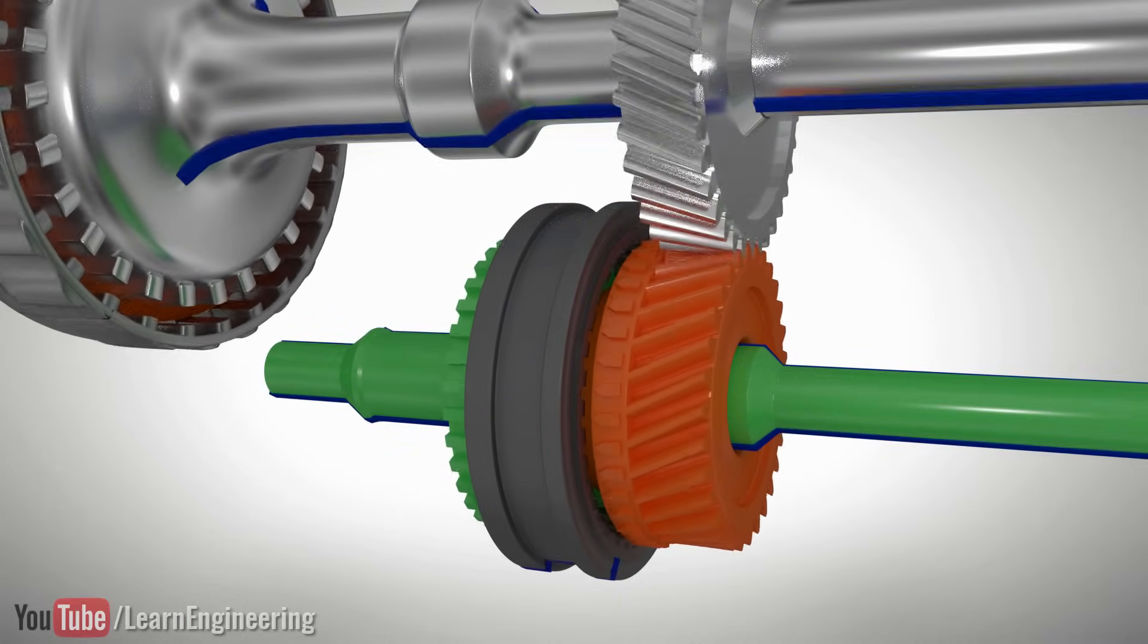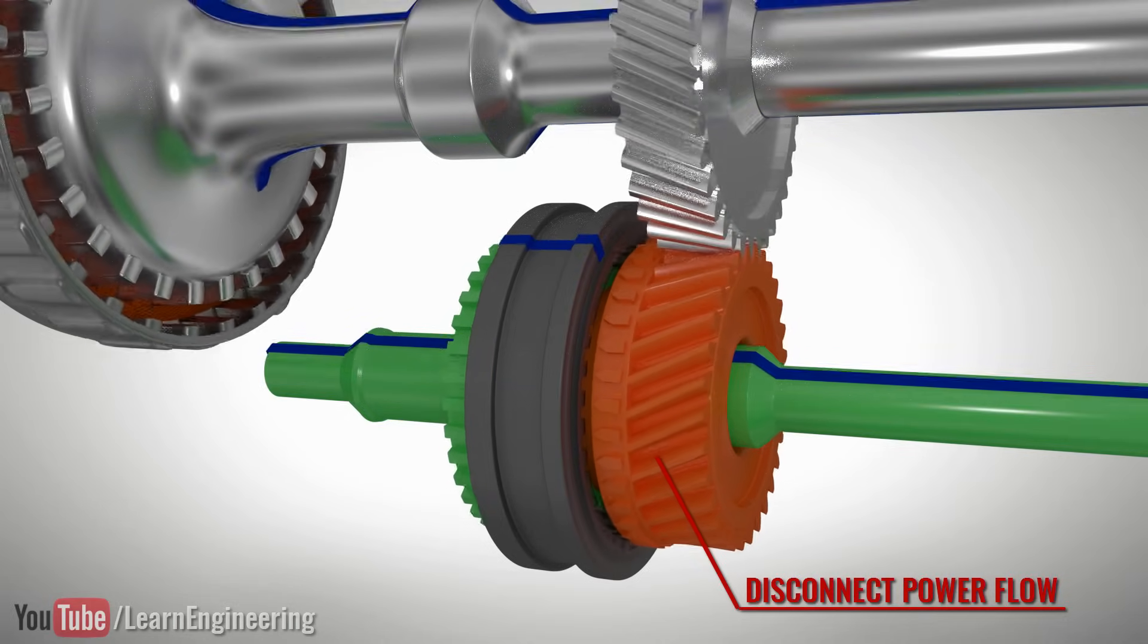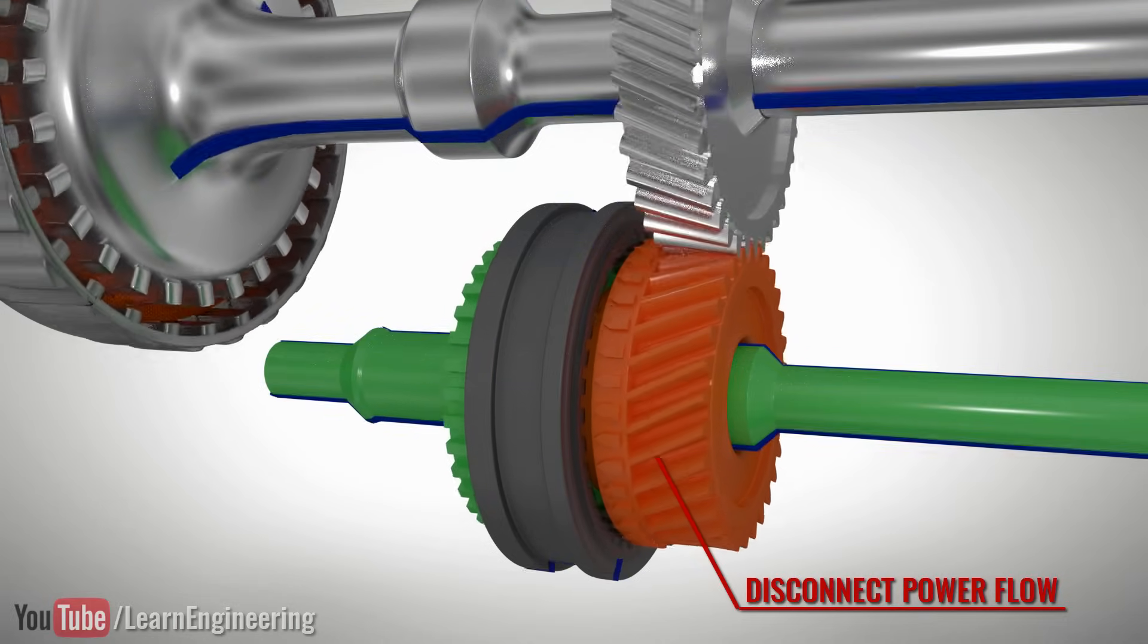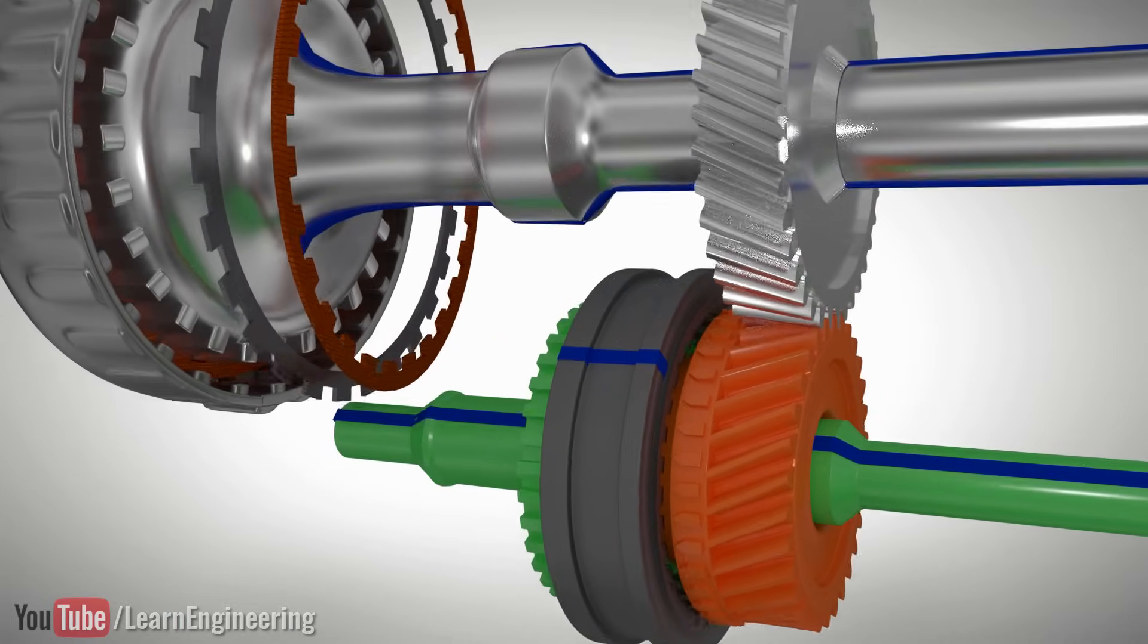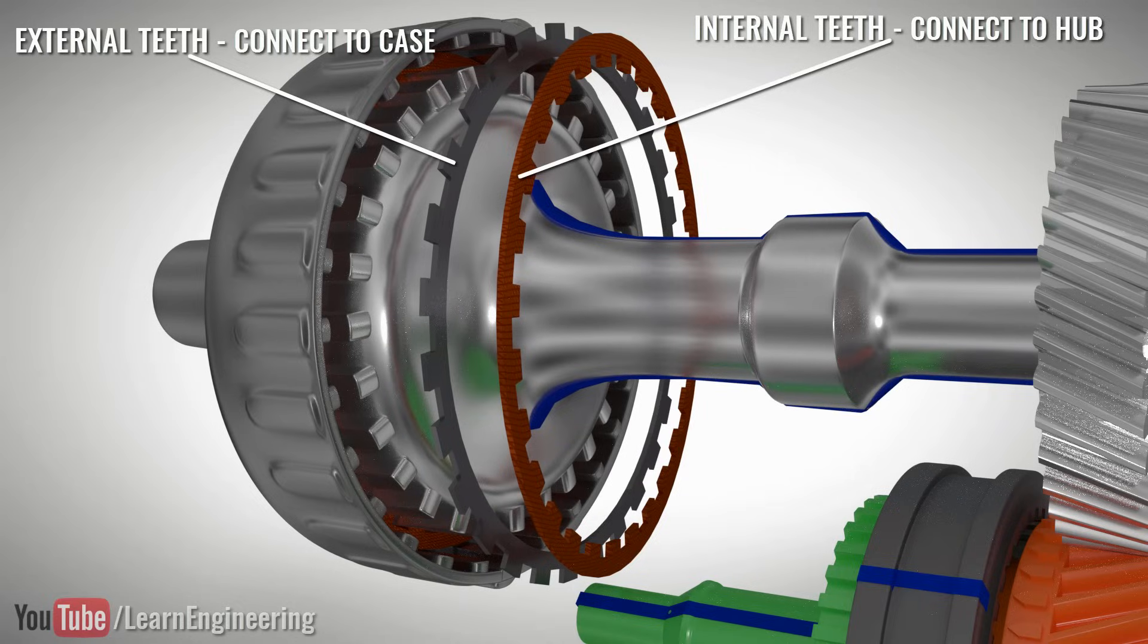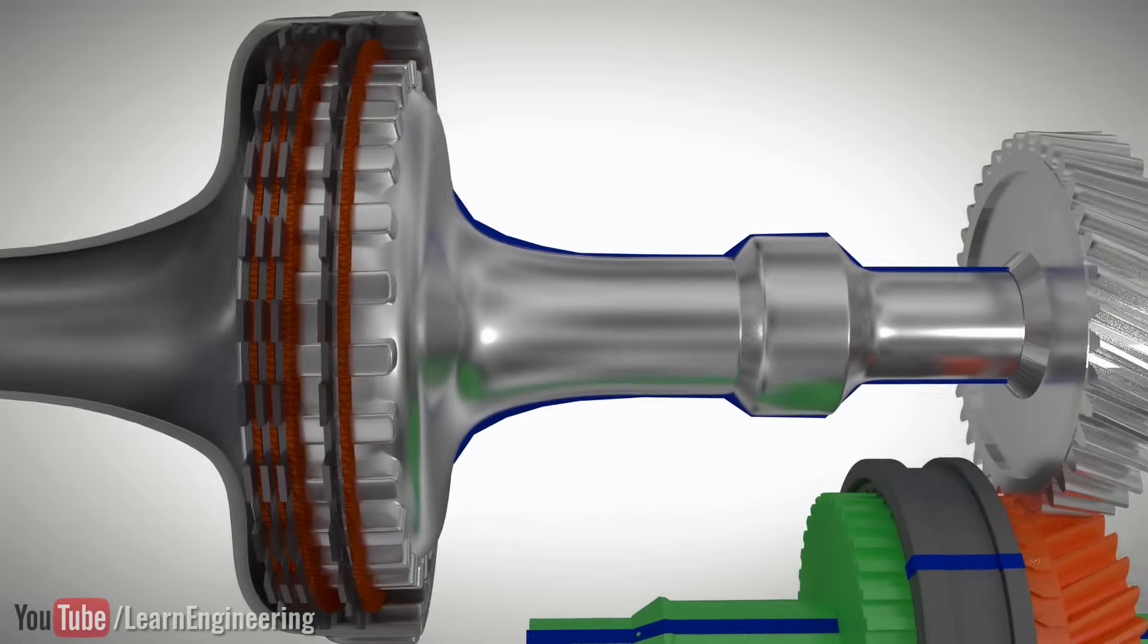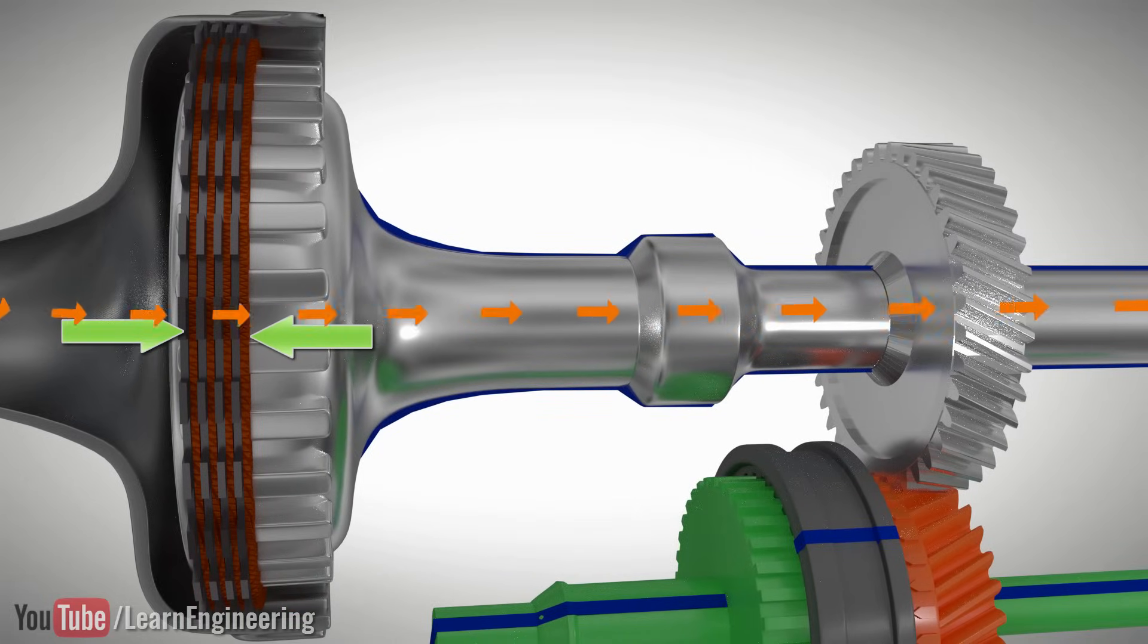The first step toward achieving a speed match is to disconnect the power flow to the transmission. For this purpose, a set of clutch plates are used at the input side of the transmission. When these clutch plates are pressed together, the frictional force within them connects the engine input to the transmission.